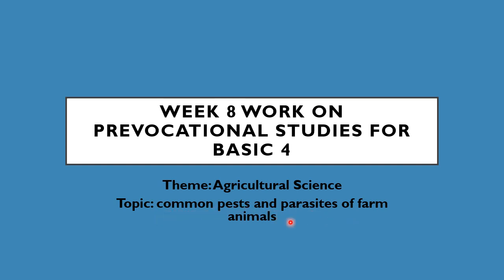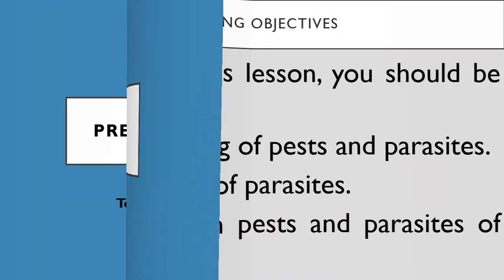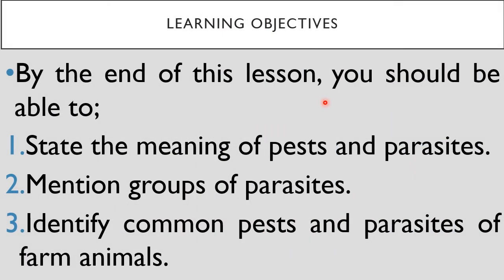First, let's look at our learning objectives. By the end of this lesson, you should be able to: one, state the meaning of pests and parasites; two, mention groups of parasites; three, identify common pests and parasites of farm animals. Now let's go straight to what we have for this week on this subject and topic.